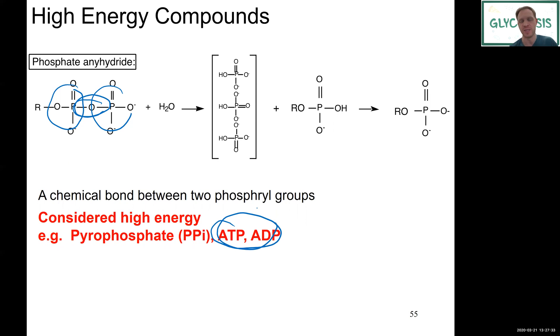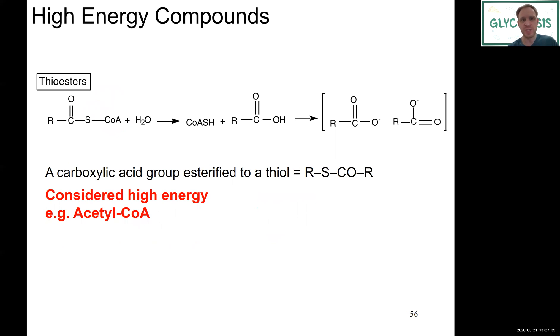Last but not least: thioesters. We won't see them too much this quarter, but I want to include them here for completeness. These are carboxylic groups that are esterified through a thiol, so you have your thiol function here—there's a sulfur group. The general formula is this one here. Again, I include them here for completeness, but one of the really important metabolites that we will see this quarter that falls into the thioester group is acetyl-CoA, one of the really key intermediates throughout our energy metabolism.